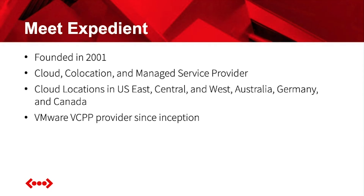Expedient was founded in 2001 and is a colocation, cloud, and managed service provider. We have cloud locations in the US across east, central, and west regions, along with international locations in Australia, Germany, and Canada. We've also been a provider in the VMware Cloud Air Network — the VCPP program — since its inception, which is important for how you consume licensing from a DR as a Service perspective.